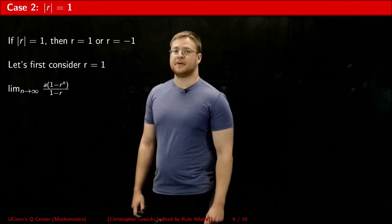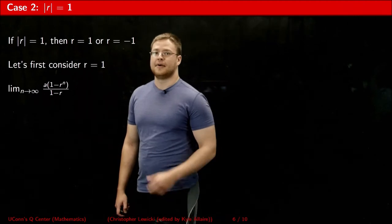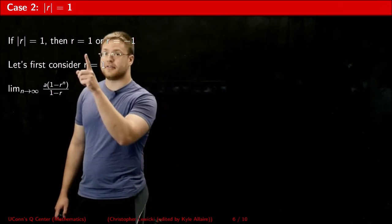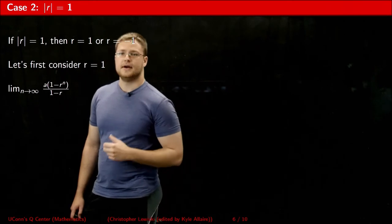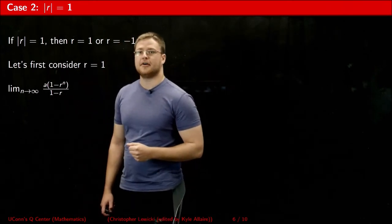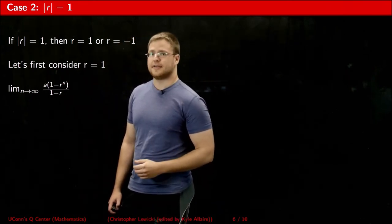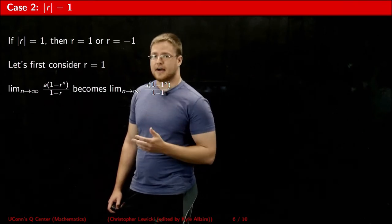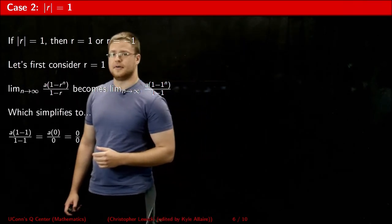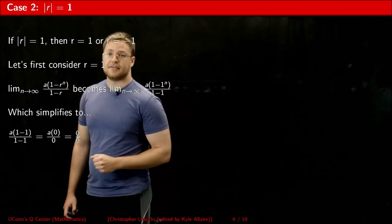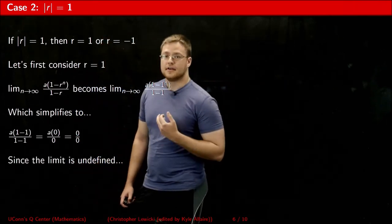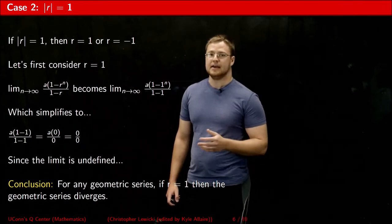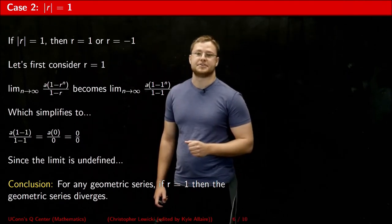Case number 2 can be broken down into two mini-cases. If the absolute value of r equals 1, then r is either 1 or negative 1. Let's first consider the possibility that r is equal to 1. If that's the case, then substituting r into the limit is obviously going to make the denominator 0. Dividing by 0 is undefined. So I conclude that if the value of r equals 1, then the geometric series diverges.